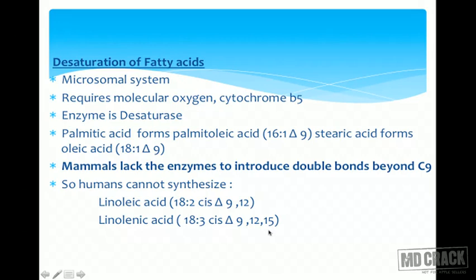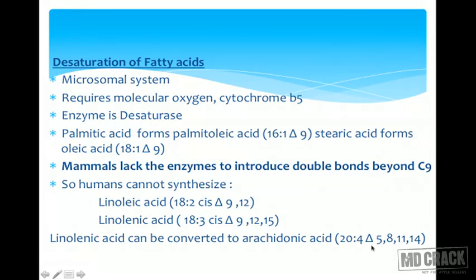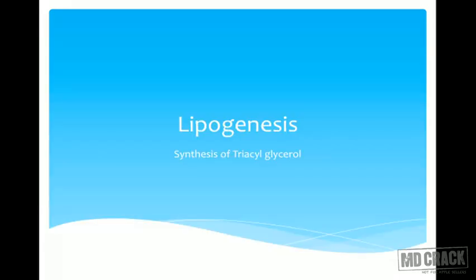Humans cannot synthesize linoleic acid (Δ9,12) because we cannot introduce a double bond at the 12th position, nor linolenic acid (Δ9,12,15) because we cannot introduce bonds at the 12th or 15th positions. Arachidonic acid is also considered essential. However, in the body it can be synthesized from linolenic acid by elongation followed by desaturation: 18-carbon linolenic acid is elongated to 20 carbons, double bond positions shift, and a double bond at the 5th position is introduced, giving arachidonic acid (Δ5,8,11,14). Still, the amount formed may not be sufficient, so arachidonic acid is considered essential.